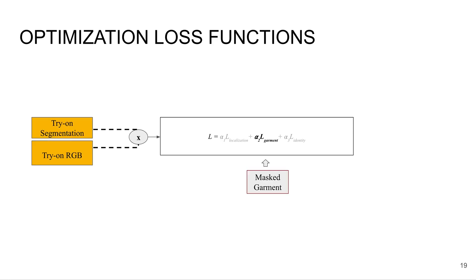The second loss is a garment loss, where we want to make sure that we transfer the details and shape of the garment. This takes in two inputs. The first is formed by taking the segmentation output from our network and masking the garment from the output tryon image. And the second input is the masked garment from the original garment image. We take a weighted difference between VGG features as the loss.